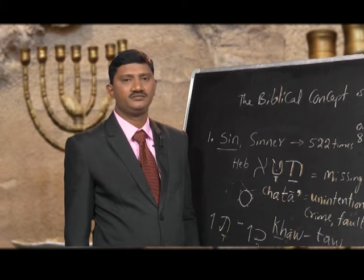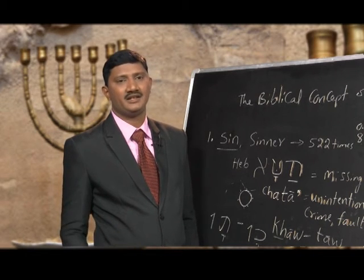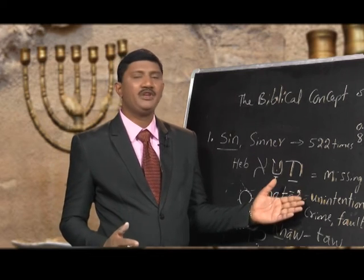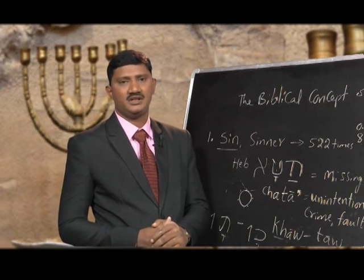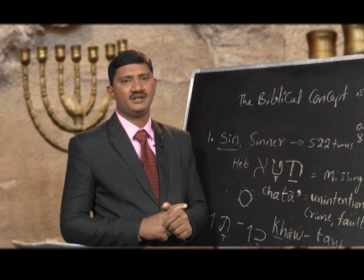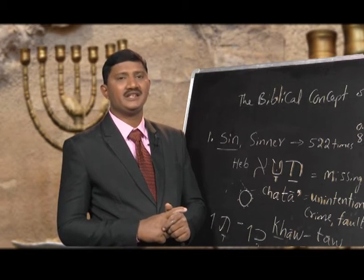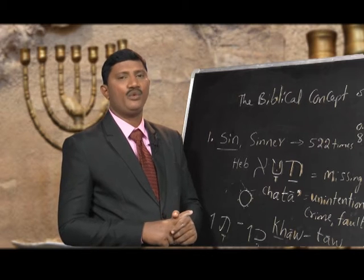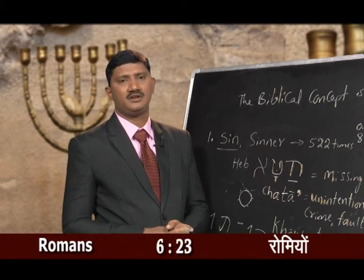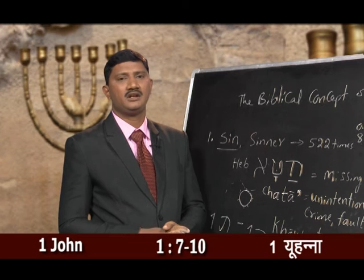I believe now you are able to know what sin is. Sin — khata — means missing the mark. It is to miss the mark that God has set before us. And we know that the wages of sin is death, as the Bible says in Romans 6:23. And in 1 John chapter 1, verses 7 through 10.